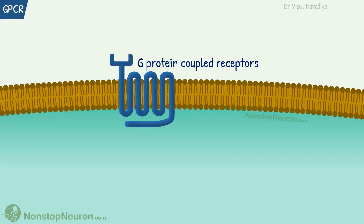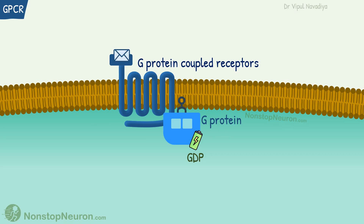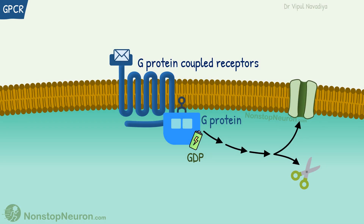Next, G-protein coupled receptors. They are the largest family of cell surface receptors and mediate responses to a wide range of signaling molecules. On the cytoplasmic side, they associate with G proteins. G proteins are named so because they bind with GTP or GDP. The binding of a ligand with such receptors initiates a series of intracellular events that ultimately regulates the function of various enzymes and ion channels. For example, adrenergic receptors found in cardiac muscle cells are G-protein coupled receptors.